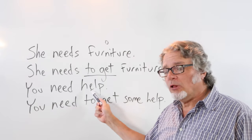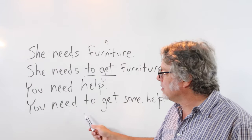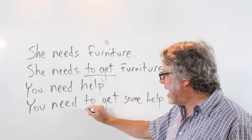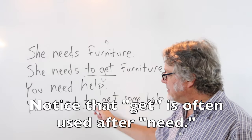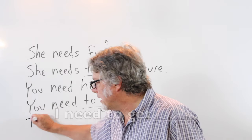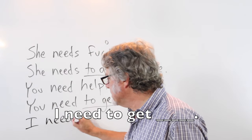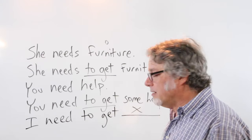You need help. This is an object. Or you need to get some help. Notice that get is often used after need. I need to get and then the thing.